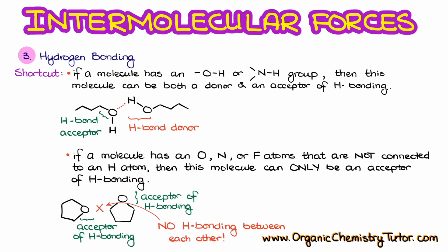A shortcut: always look for O–H or N–H groups when searching for hydrogen bonding — they can serve as both hydrogen bond donors and acceptors. If your molecule only has nitrogen or oxygen atoms not connected to hydrogen, those can only serve as hydrogen bond acceptors, so there will be no hydrogen bonding between those molecules. For instance, two molecules with O–H groups can interact as donor and acceptor, but tetrahydrofuran (THF), which has oxygens but no O–H groups, can only accept hydrogen bonds — so a pure sample of THF has no hydrogen bonding.